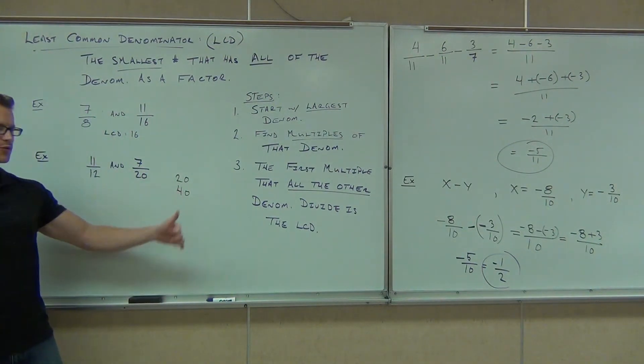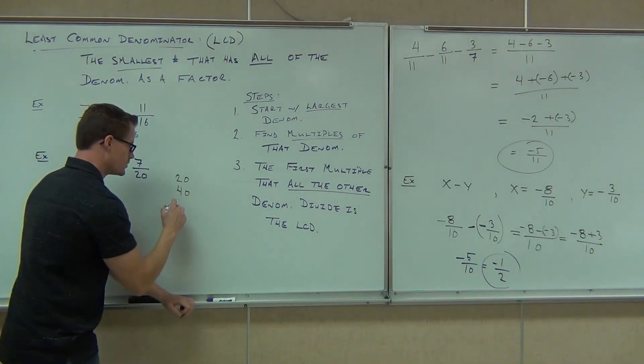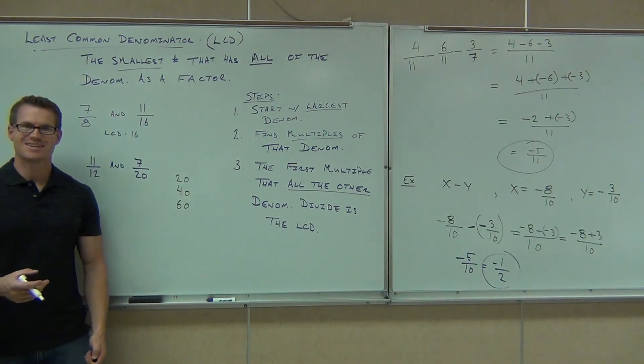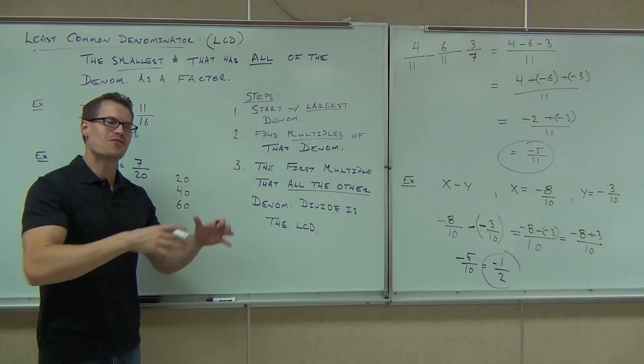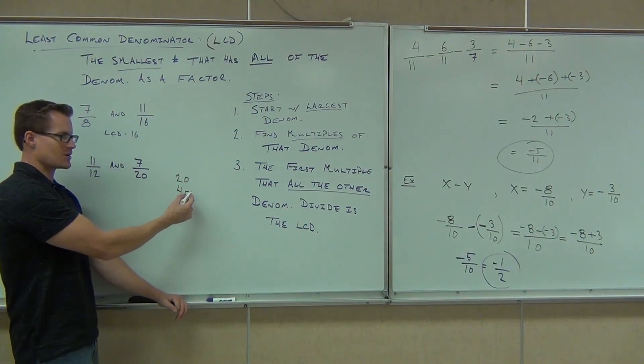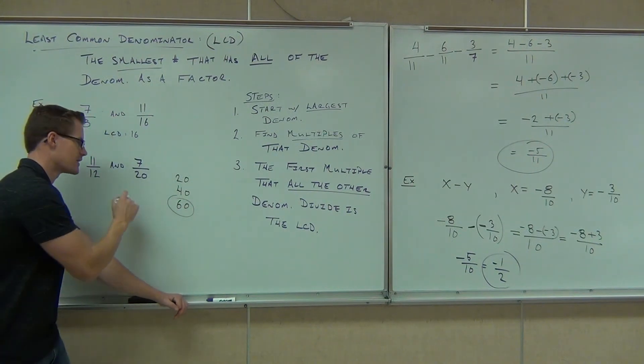Does 12 go into 40? No. So you've got to keep going. What's the next multiple? 60. Does 12 go into 60? Yeah. Okay. That's the LCD. You find the first one. 20 didn't work. 12 didn't go into that. 40 didn't work. 12 didn't go into that. 60. 12 goes into that. That right there. That's your LCD.